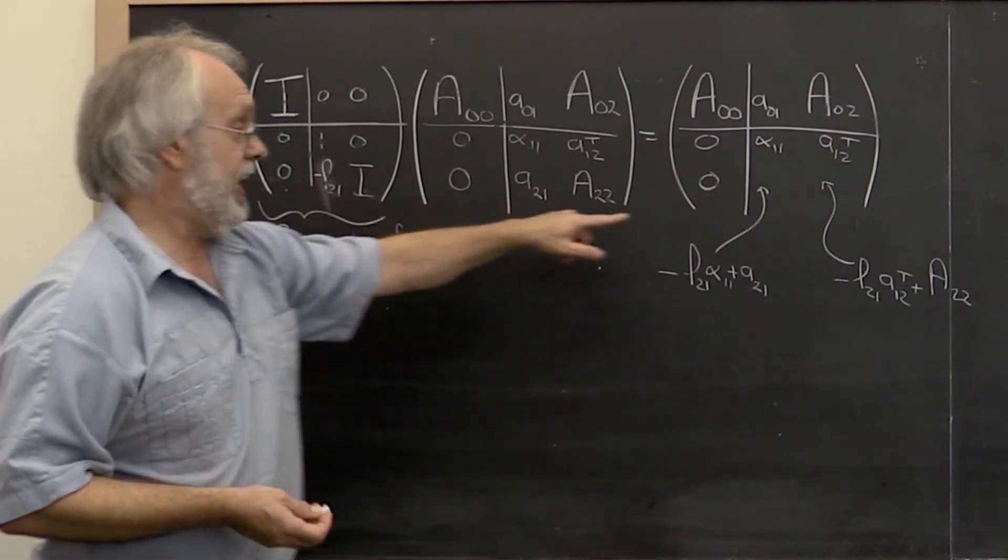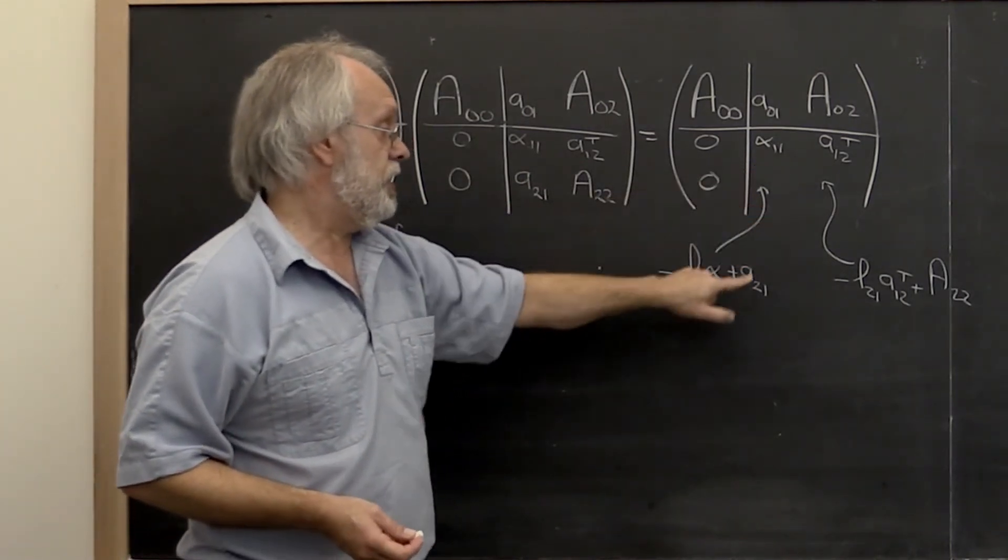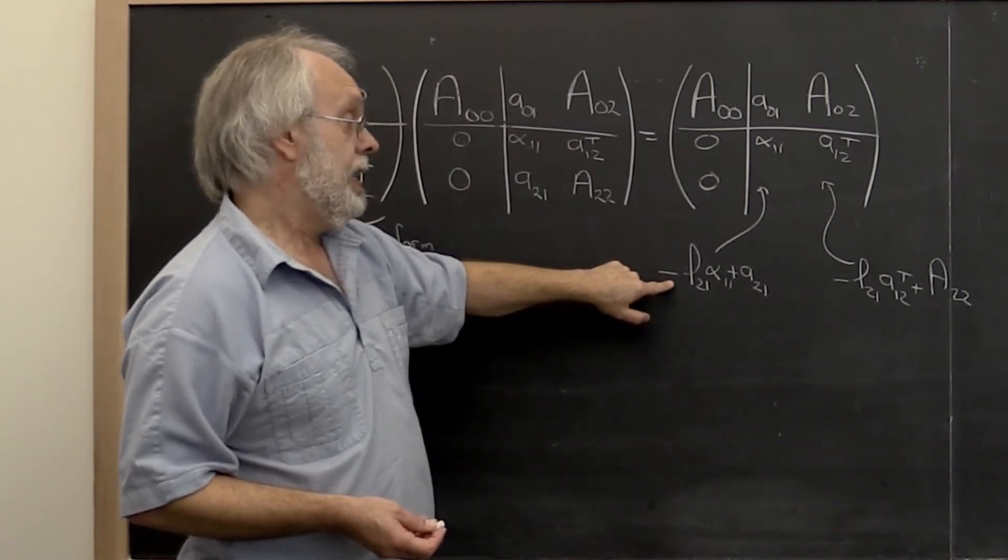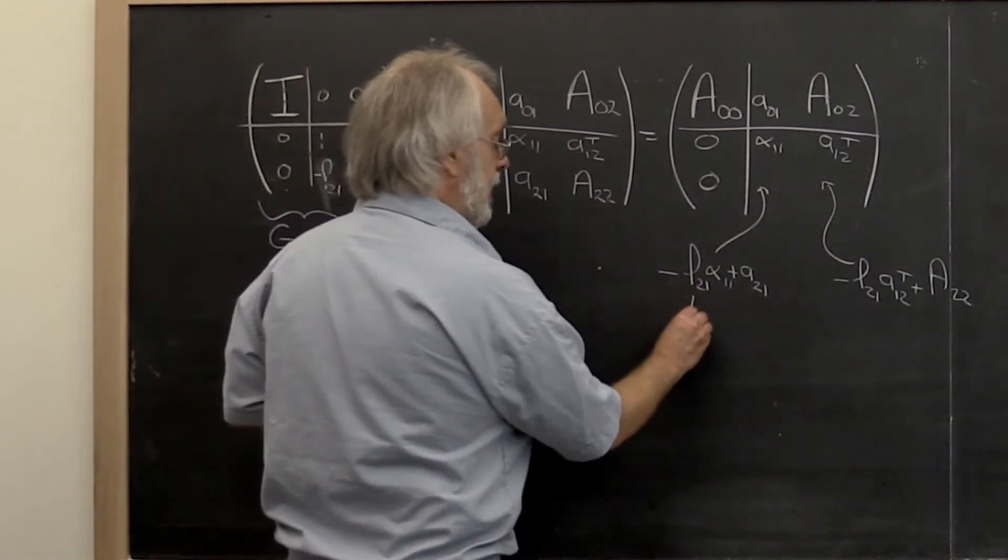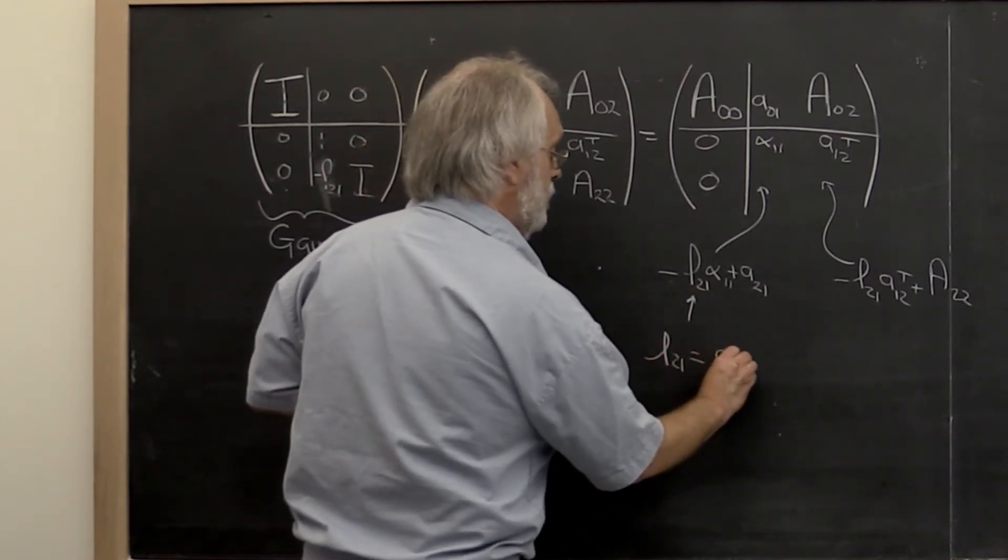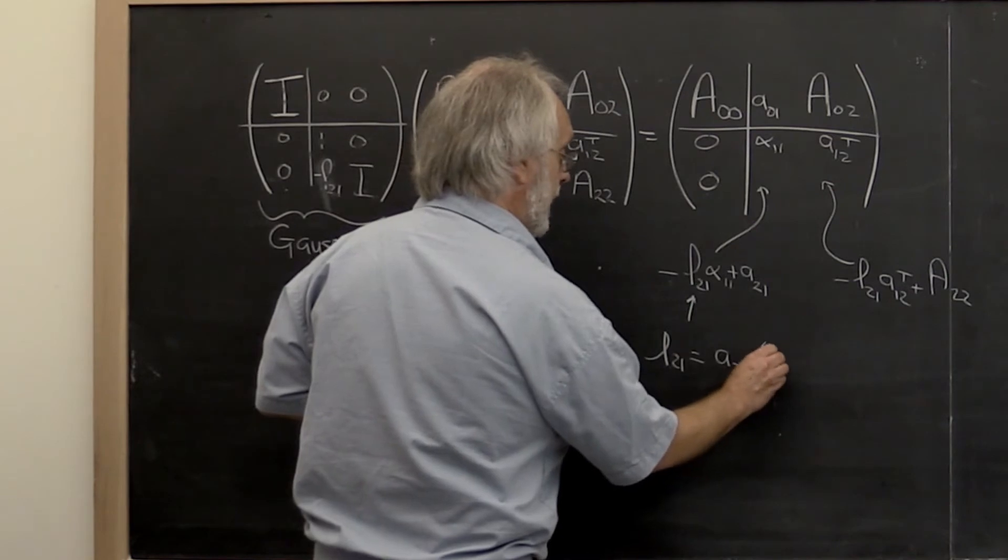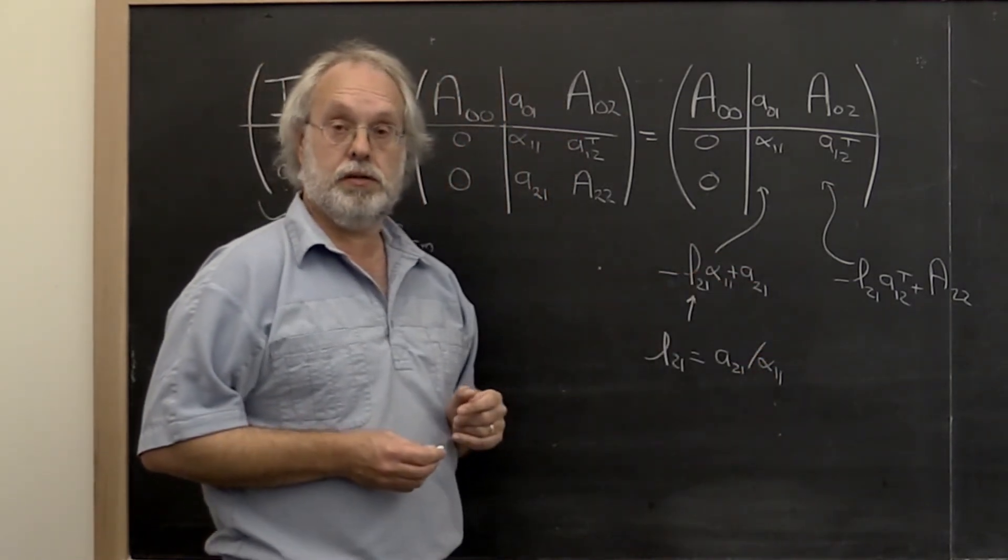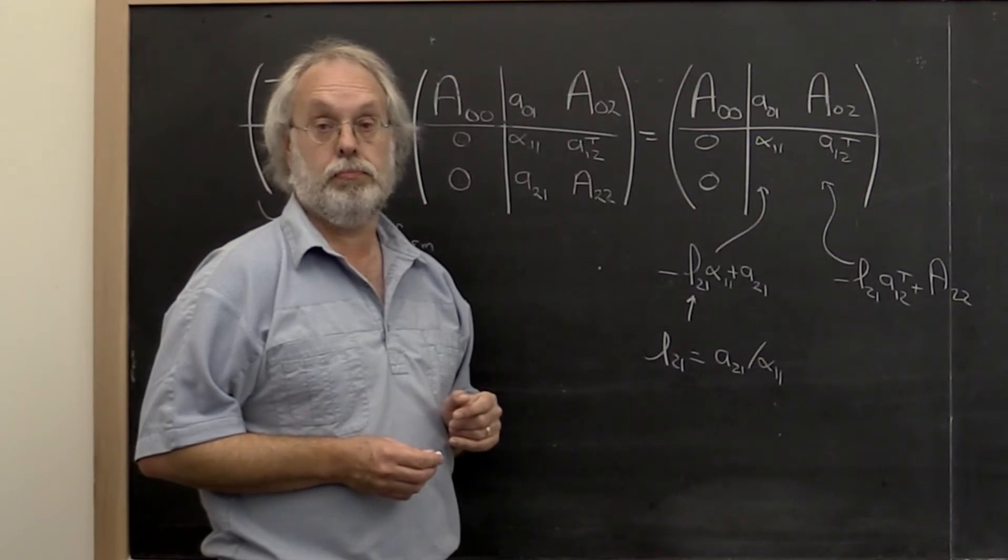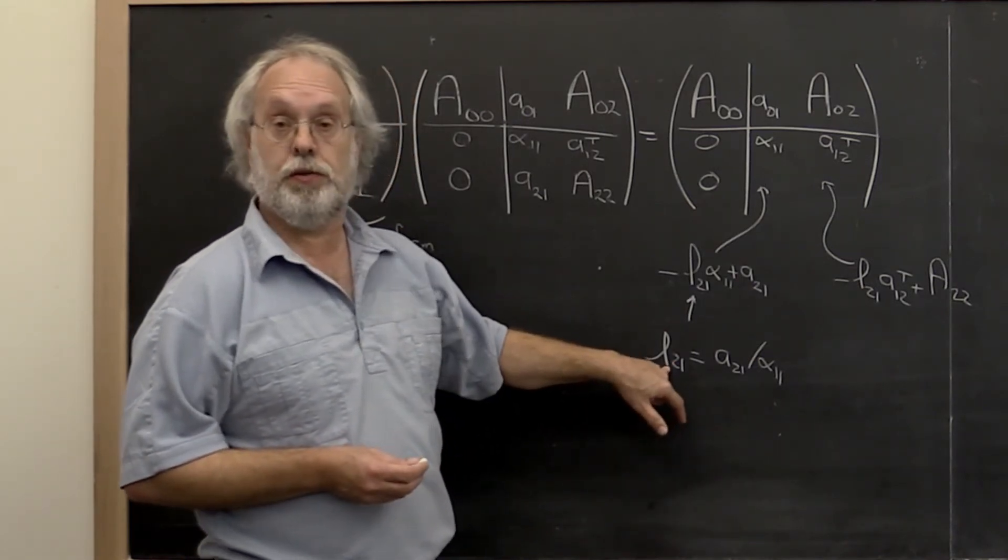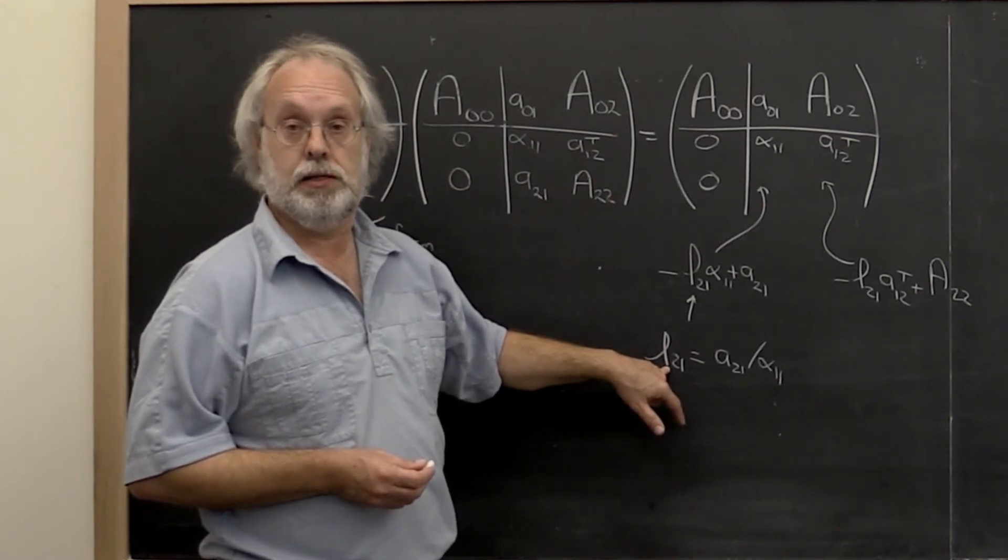Now the purpose of the game is to introduce zeros here. So we would like this result here to be zero. And it's not hard to see that if you pick L21 to be A21 divided by alpha 1 1 then this expression becomes zero. Where have we seen that before? That's the computation of the multipliers.